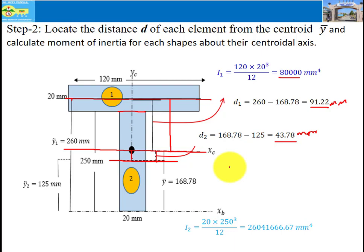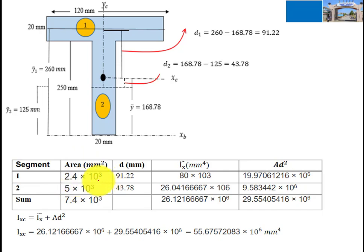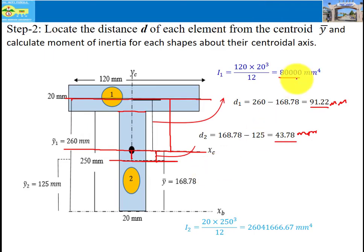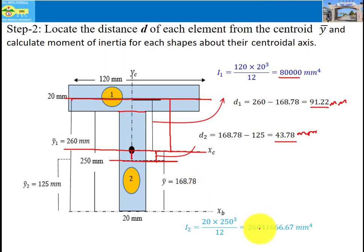To simplify the calculation, we use a table. The columns are: segment, area, d, moment of inertia of each shape about their centroidal axis, and A·d². Area of shape one is 2.4 times 10 to the power of 3; area of shape two is 5 times 10 to the power of 3. d1 is 91.22 mm and d2 is 3.78 mm. The centroidal moment of inertia for shape one is 80 times 10 to the power of 3, and for shape two it is 26.04 times 10 to the power of 6.